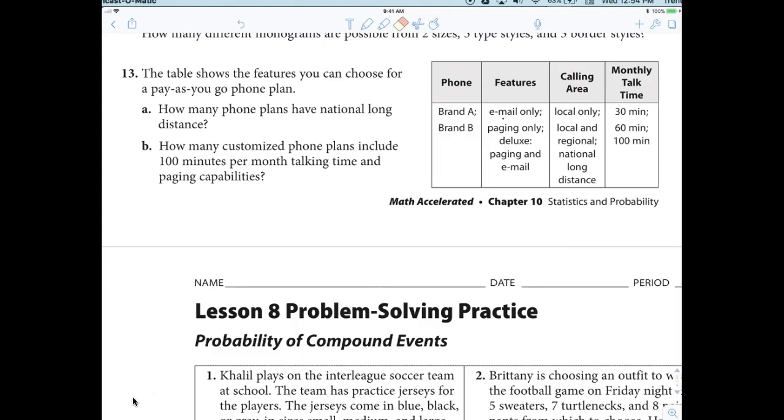The table shows the features you can choose for a pay-as-you-go phone plan. So how many phone plans have national long distance? Eighteen. I'm not sure if that's correct, but I think she's correct. Now, let's figure out how she got that. You have how many features to select from? There are four features. Does everybody agree? So here's what I want you to get used to doing.